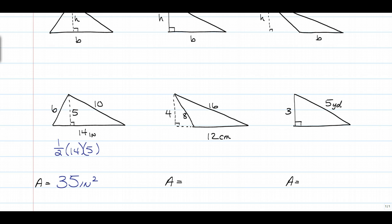So the second one. The base is 12. But the height is not 8, it's not 16. The height is 4. So the only reason it's tricky is because the height is actually outside of the triangle.